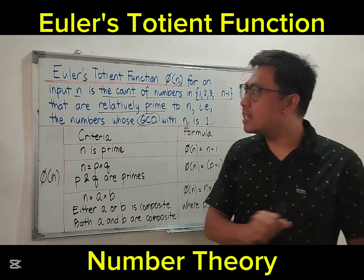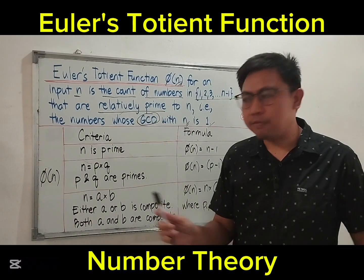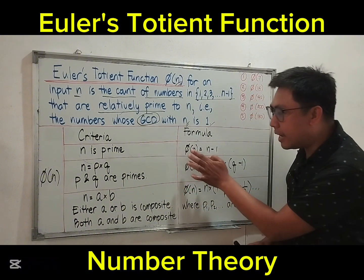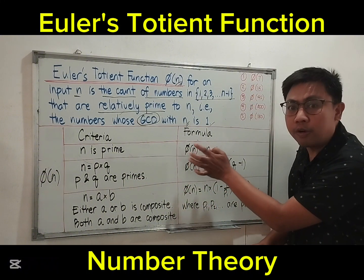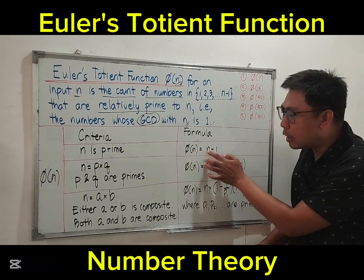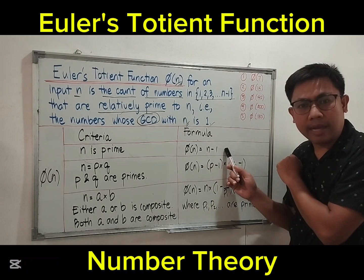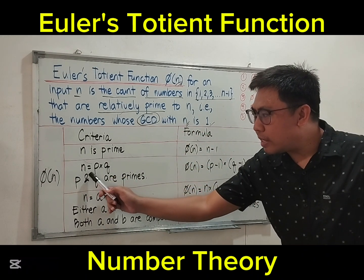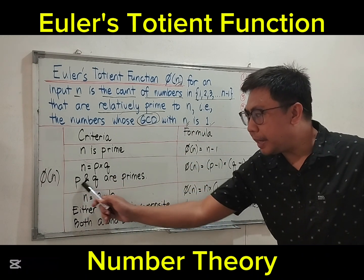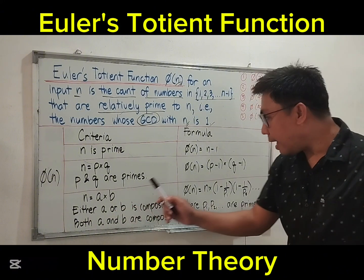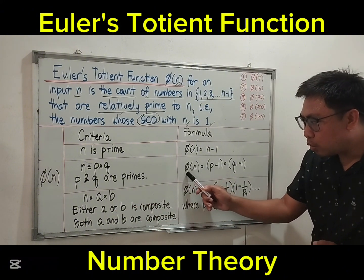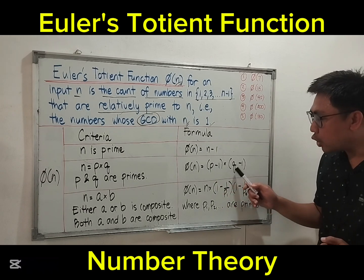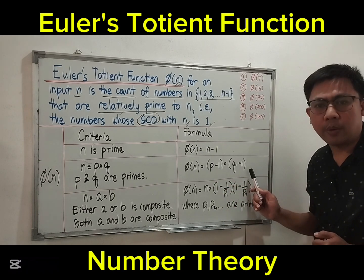We have three cases in Euler's Totient function. Case 1: if n is prime, the formula is phi of n equals n minus 1. Case 2: if n equals p times q, where p and q are primes, then phi of n equals (p minus 1) times (q minus 1).